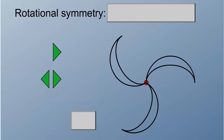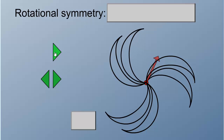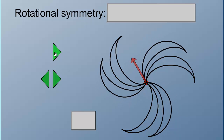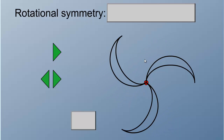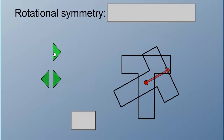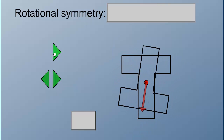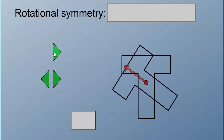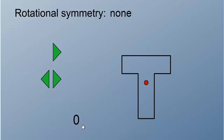Rotational symmetry is the number of times a shape would fit on itself as you rotate it by 360 degrees. For example, this one — one, two, three. As we rotate it by 360 degrees, it fits on itself three times. So the order of rotational symmetry is three. For the next one, it is rotating and it hasn't fit on itself at all, so the order of rotational symmetry is zero — none.